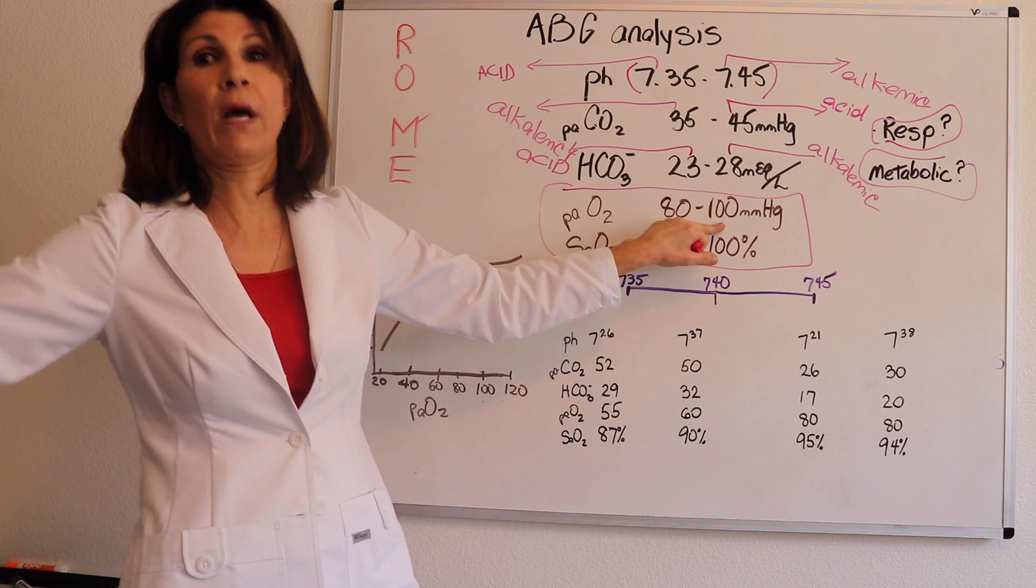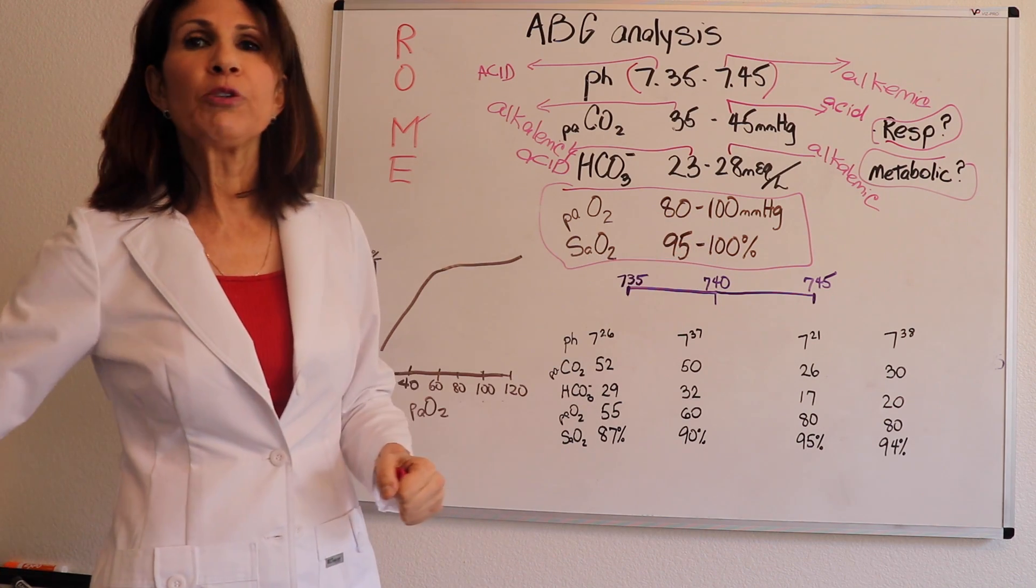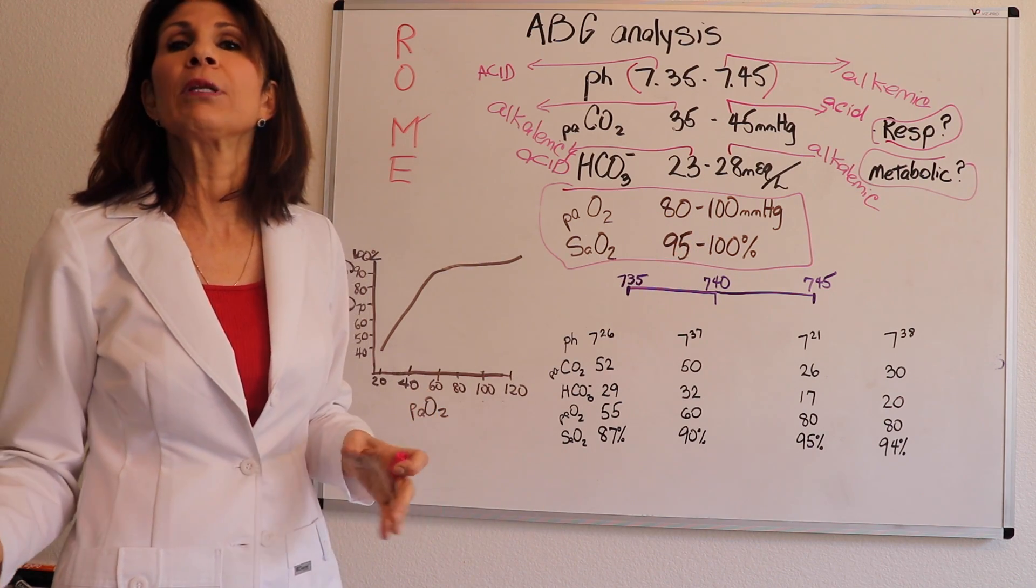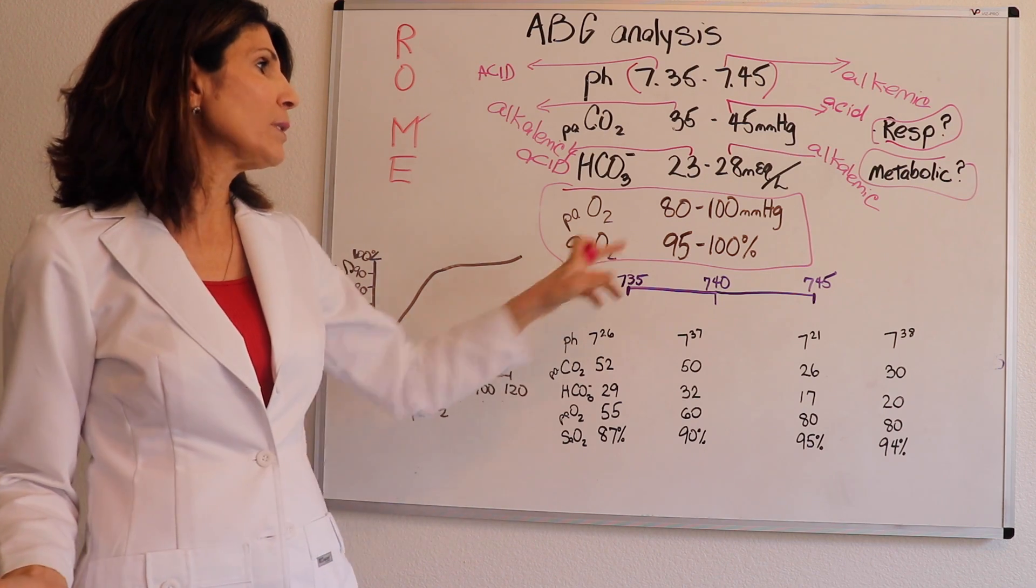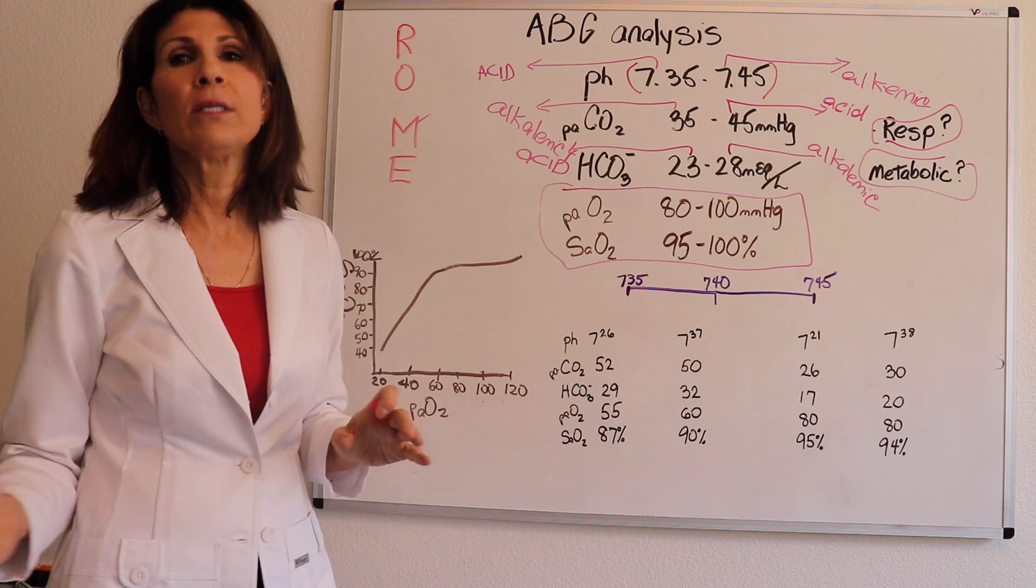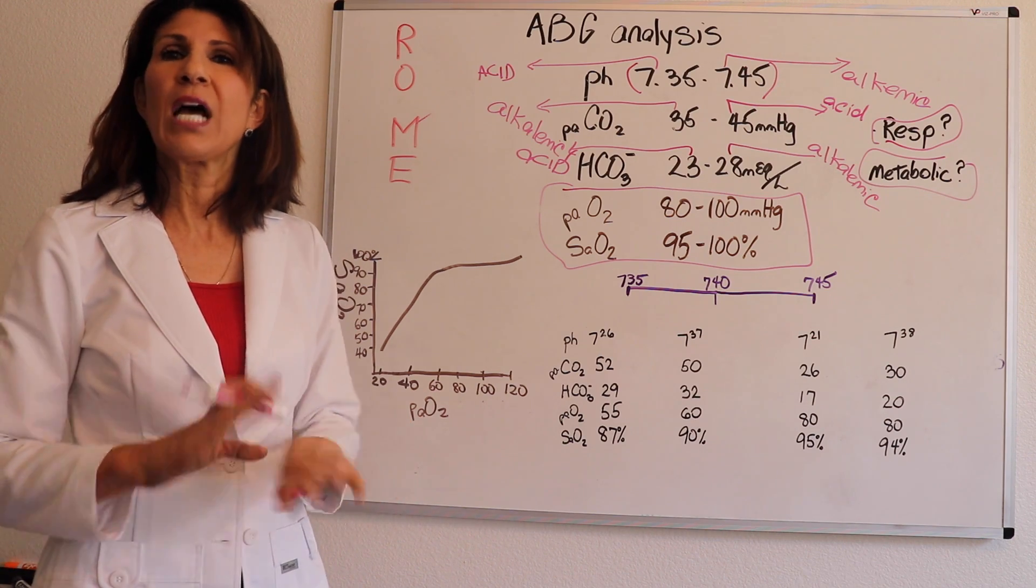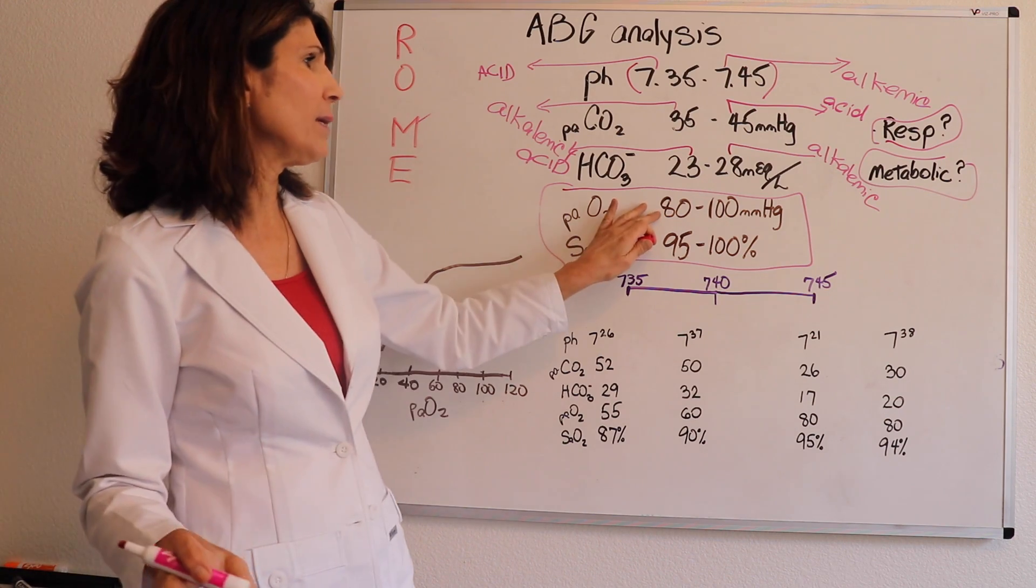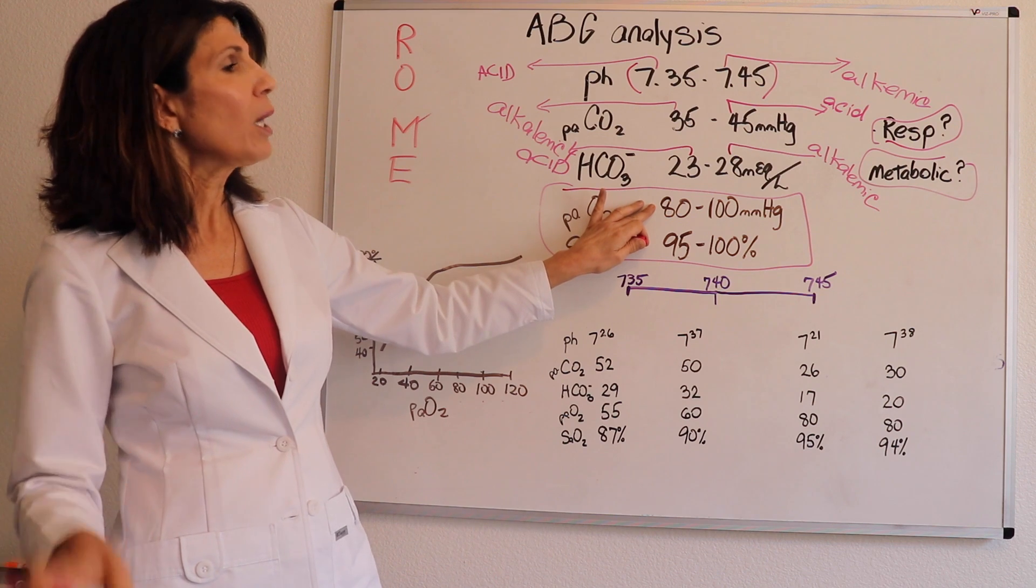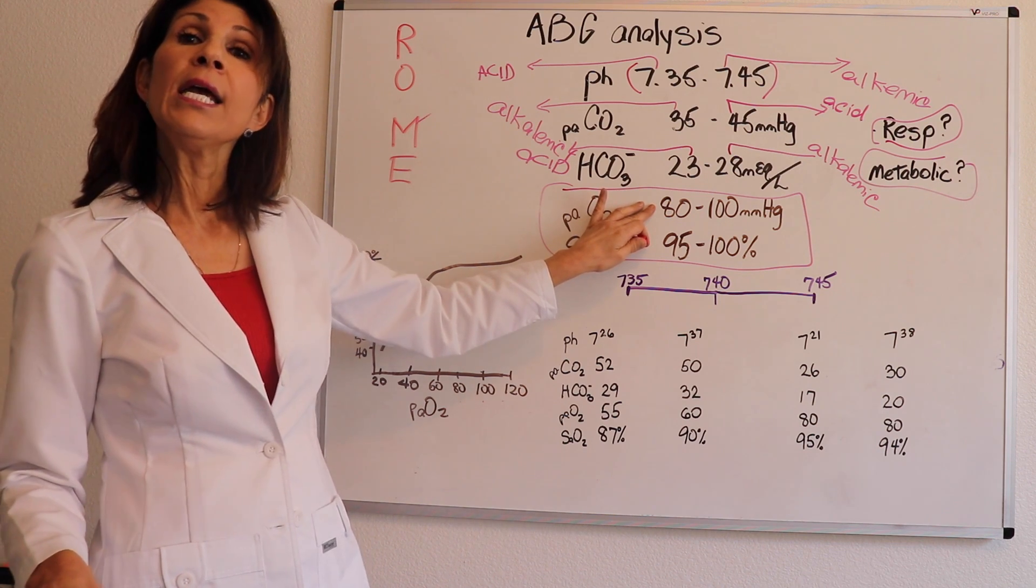Sometimes more and more is not good because we run into something called oxygen toxicity, but we're not going to talk about that. Now, just keep in mind 80 to 100 millimeters of mercury is normal. And then when we start dipping below like 60 to 80, we're talking about a mild, what's called hypoxemia.